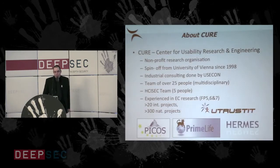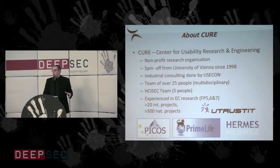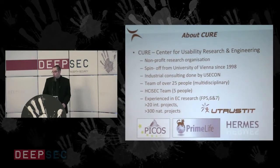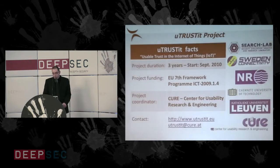CURE, the Center for Usability Research and Engineering, is a non-profit research organization. We are a spin-off of the University of Vienna since 1998, with an industrial consulting partner called USCON. Our team of over 25 people comes from cognitive psychology, social sciences, and so on — we are not technologists. The HCI security team is five people, and CURE is very experienced in national and international research projects.